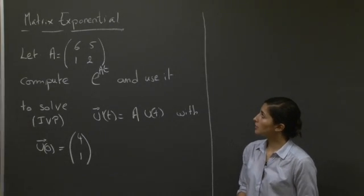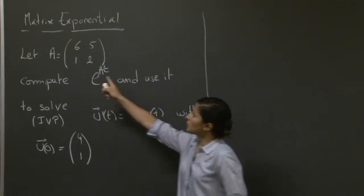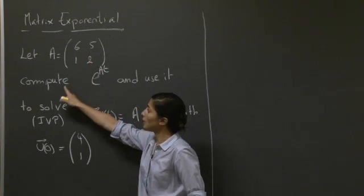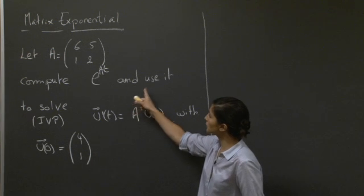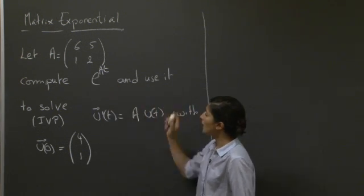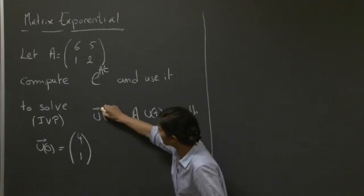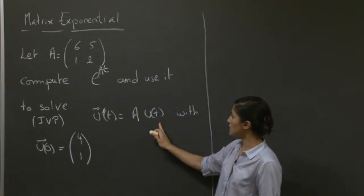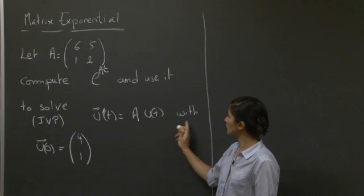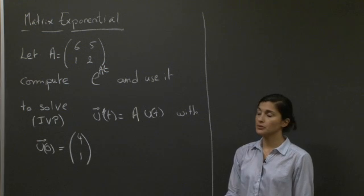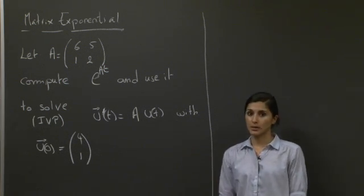Welcome to this recitation on matrix exponential. We're given matrix A with entries 6, 5, 1, 2. We're asked to compute the matrix exponential e^(At) and to use it to solve the initial value problem u'(t) = Au(t), where u are vectors, with initial condition u(0) = [4, 1]. Pause the video, work through the problem, and I'll be right back.